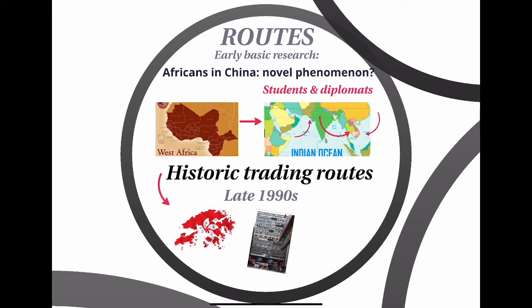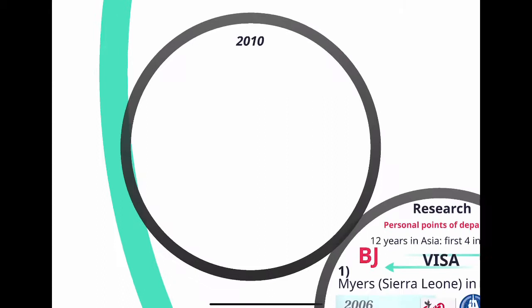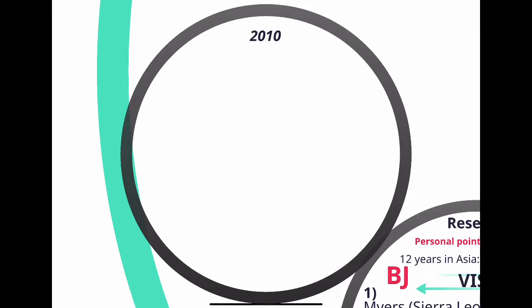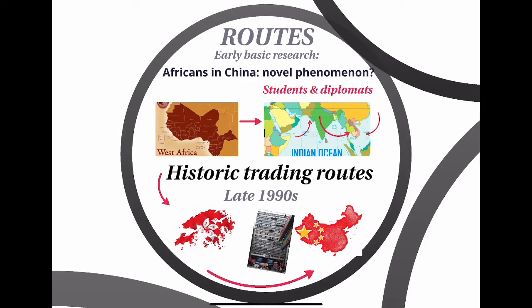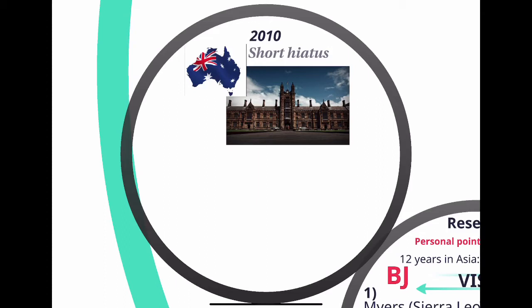In the late 1990s, Chungking Mansions in Hong Kong was really the hot spot of transnational connections between the African continent and Asia, and in particular the southern China region. In 2010, after having thought about this for a couple of years before starting PhD research, I took a short hiatus and lived in Australia for a year and a half. I did an MPhil at the University of Sydney in the Gender and Cultural Studies department, where I better defined my interest for this topic.